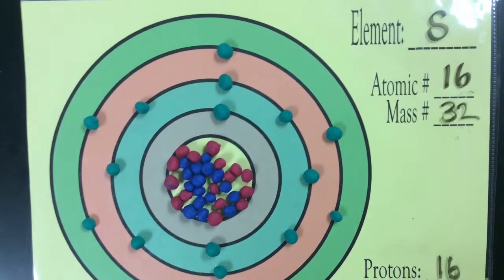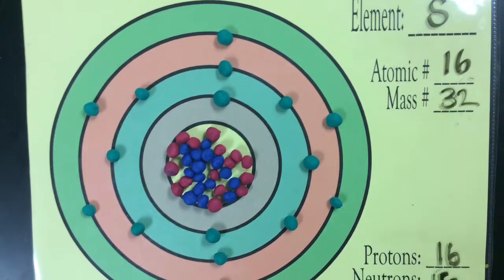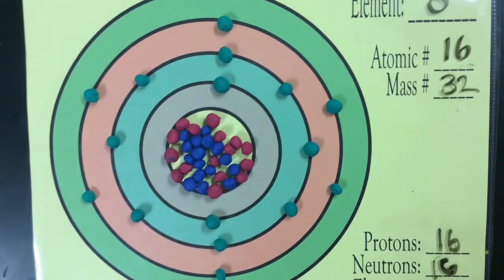This is a normal sulfur atom. It has 16 neutrons, protons, and electrons, like normal.